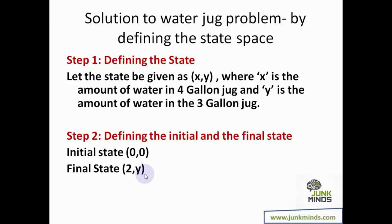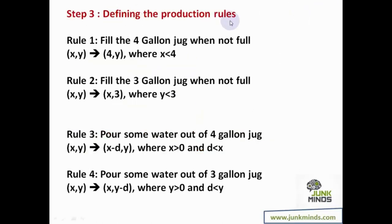In step three, we give information to the system about the jugs using production rules. Rule 1: fill the four gallon jug when it's not full — if the amount of water in the four gallon jug is x and in the three gallon jug is y, this is possible when x is less than four, so the jug is not already full. Rule 2: fill the three gallon jug when not full, possible when y is less than three.